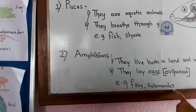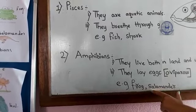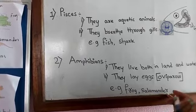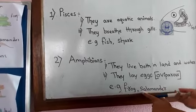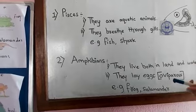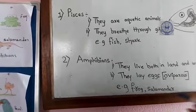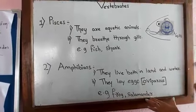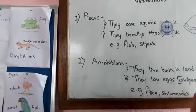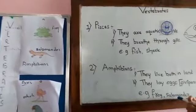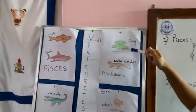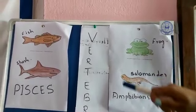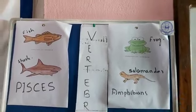Regarding pronunciation — in American English it is 'salamander' because they pronounce the R, but in British English the R is silent so they say 'salamander.' You can pronounce it either way. As I said, the examples are frog and salamander, and these come under class Amphibians.